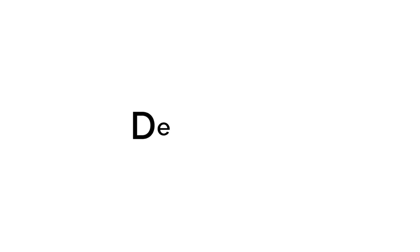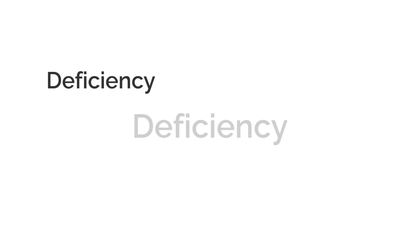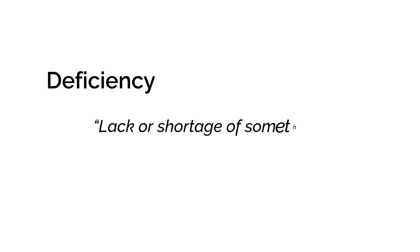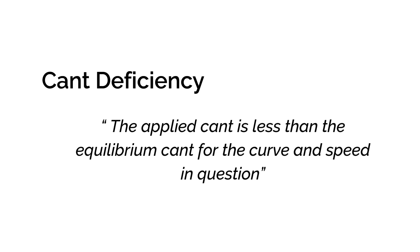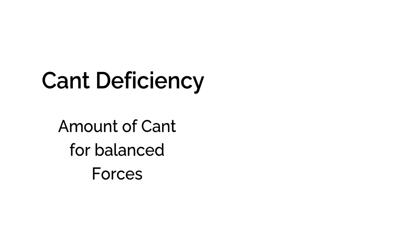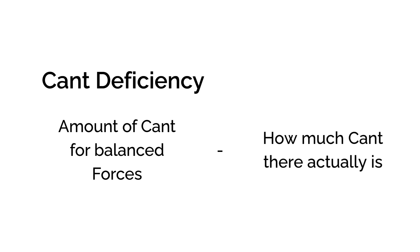If you look up the definition of deficiency, it is a lack or shortage of something. Cant Deficiency means the applied cant is less than the equilibrium cant for the curve and speed in question. In simple terms, it's the difference, measured in millimetres, between how much cant a curve should have to balance the forces and how much there actually is.